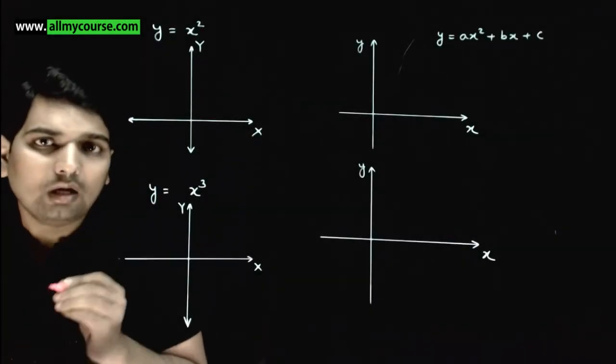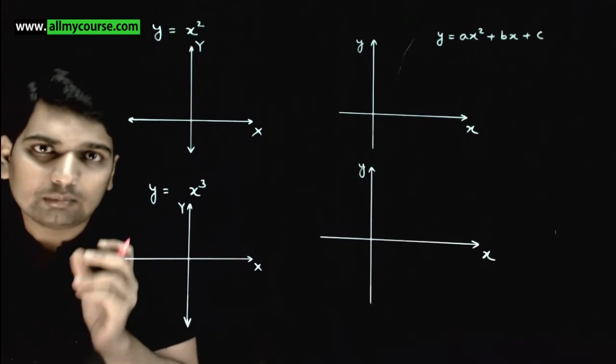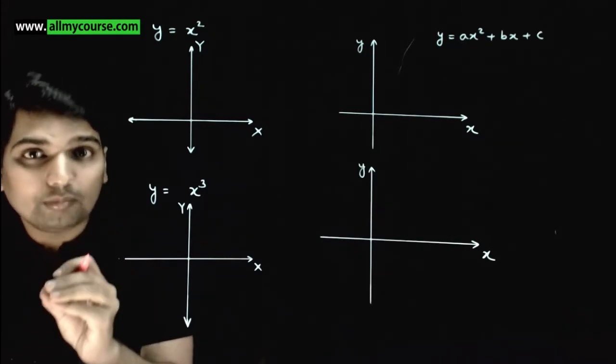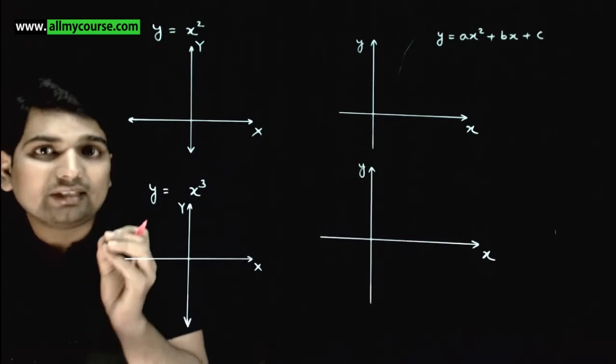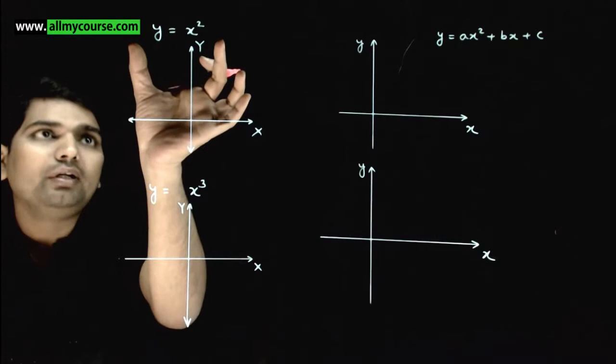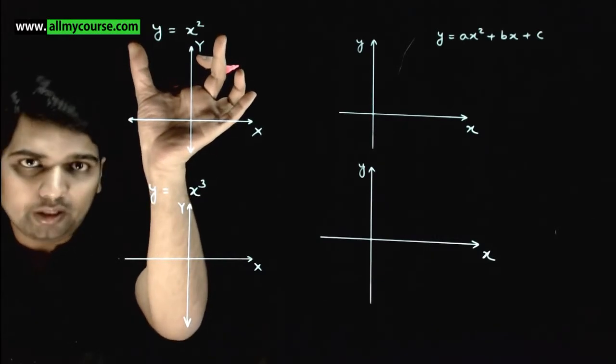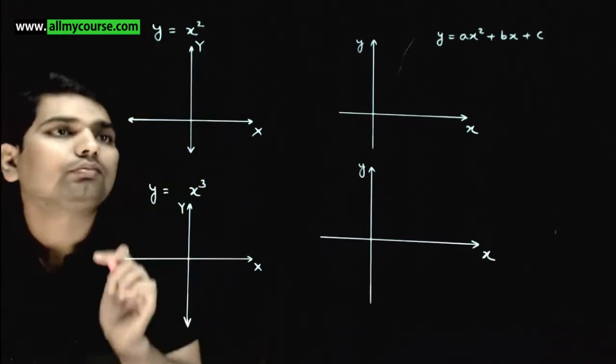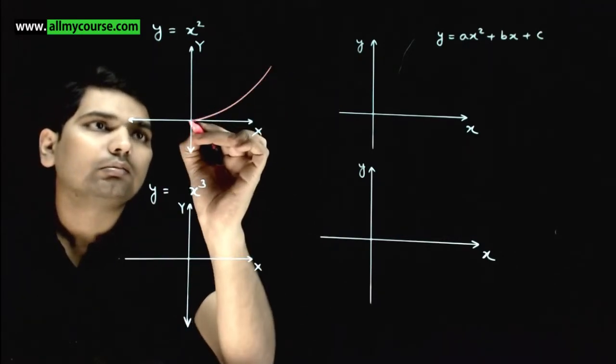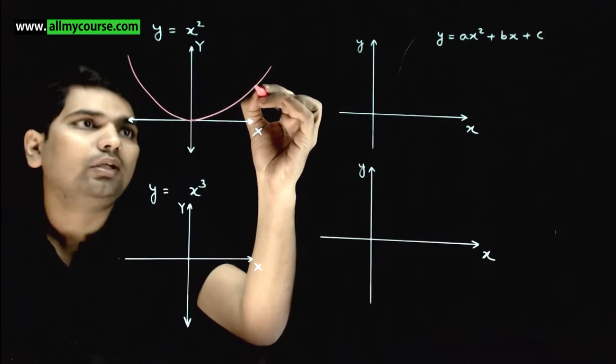So let's see how do the graphs of some functions look like? What do the graphs of some basic functions look like? Let's plot them. First, I've taken the graph of y is equal to x square. How will this graph look? The graph will look like this.